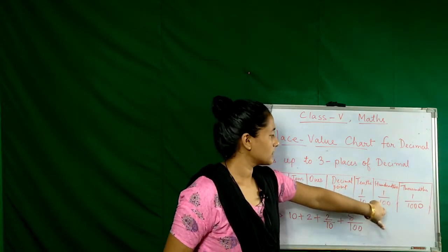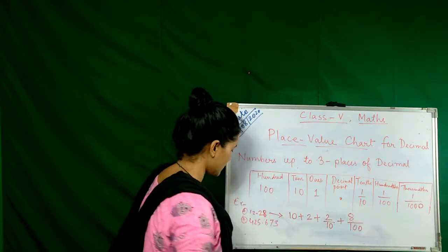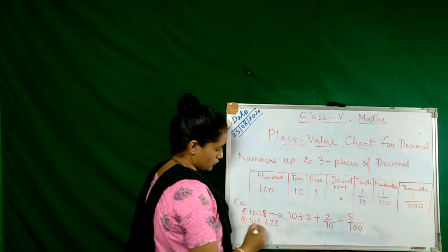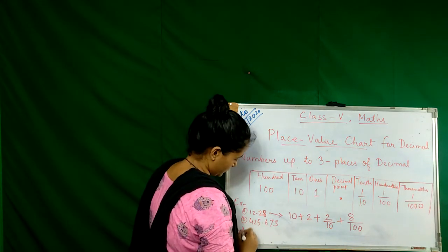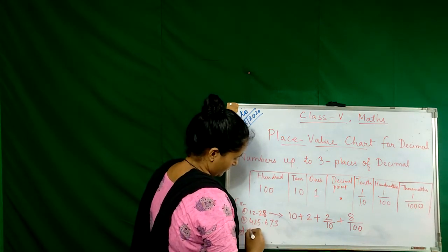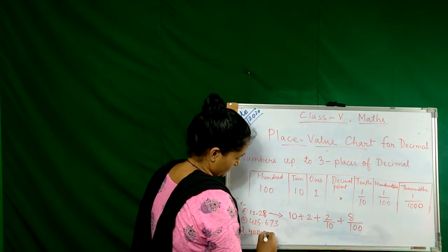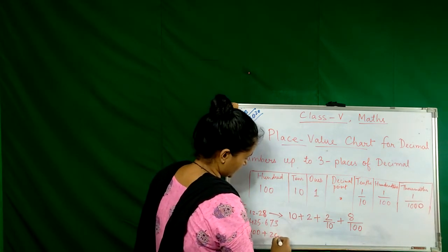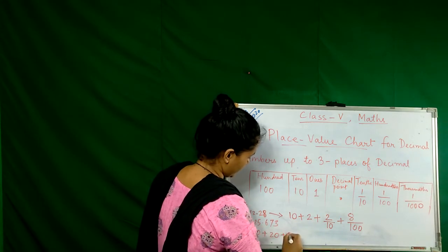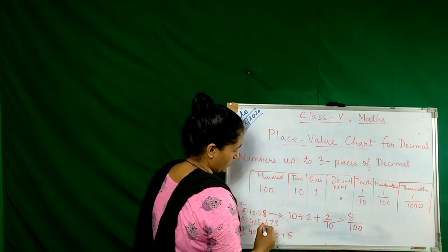And then the second one also we solve now. Four hundred plus twenty plus five. Now decimal is coming.